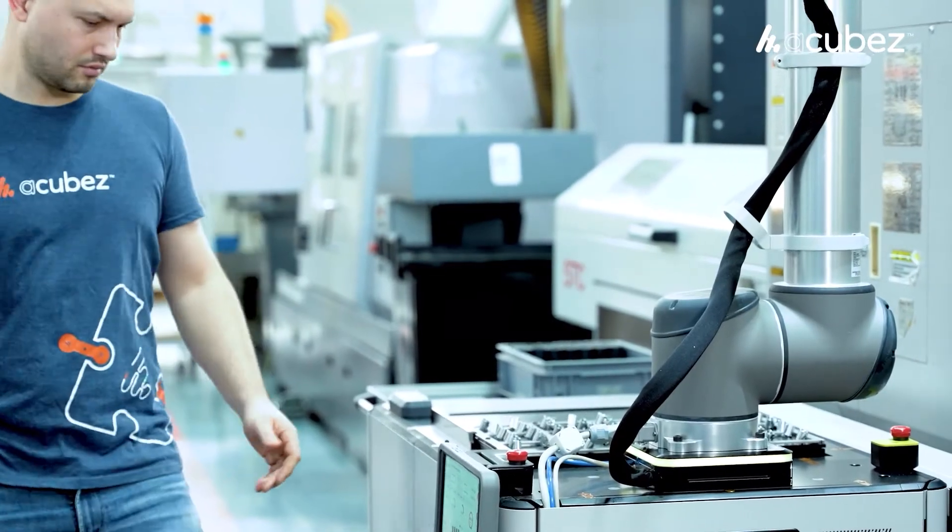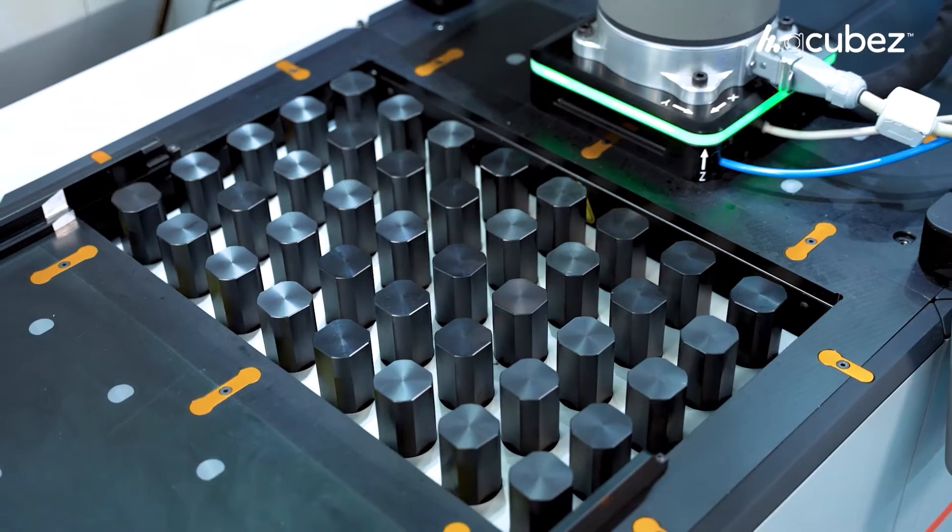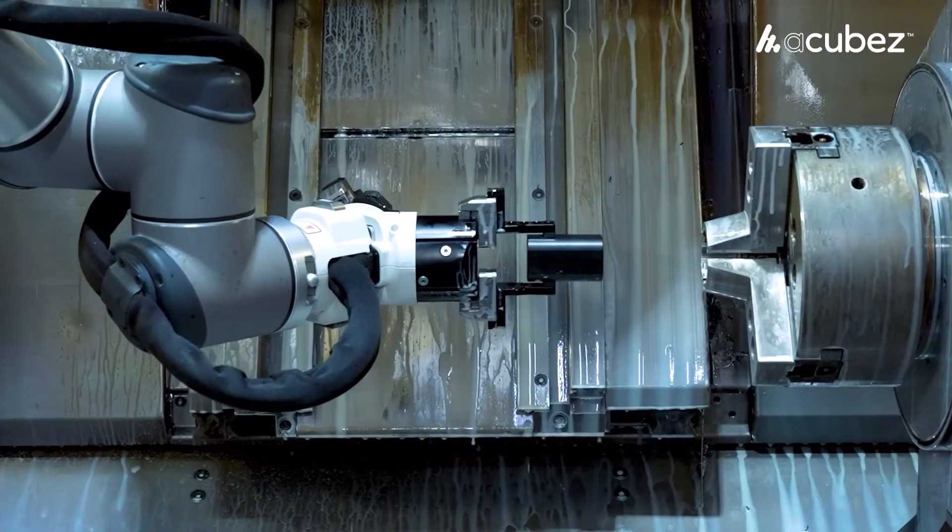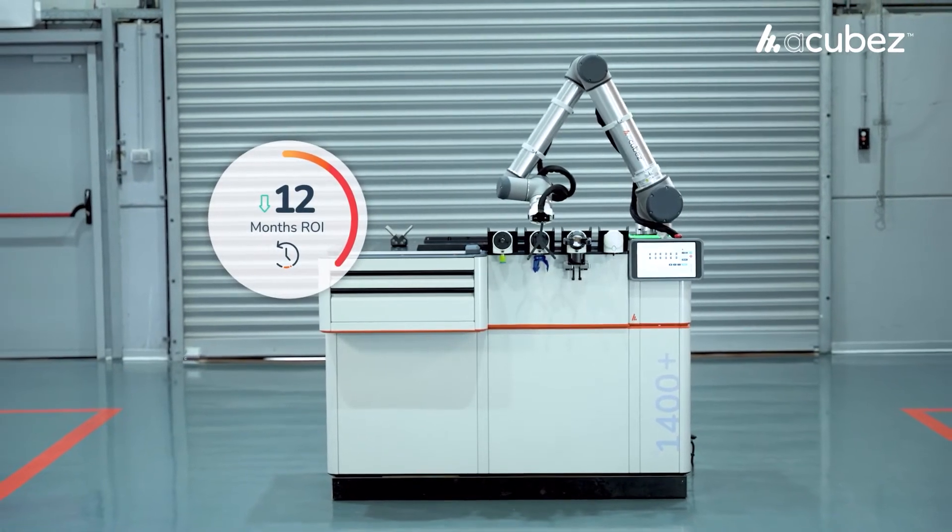Once set up, running and monitoring jobs via the A-Cube's touch interface is simpler than a phone app, raising productivity, overall equipment efficiency, and profitability, with an average return on investment period of only 12 months.